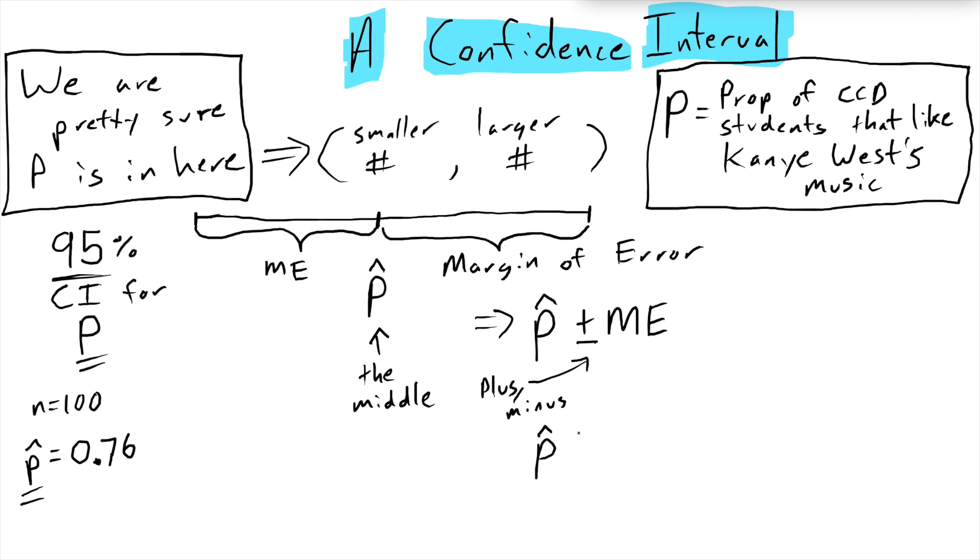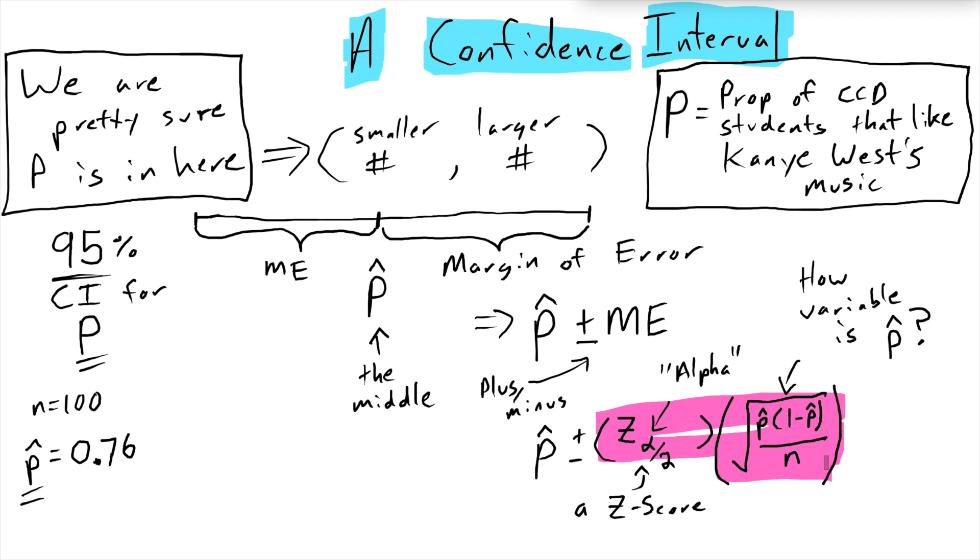But where does the margin of error come from? It comes from two quantities. The first of which is a z score. And the second of which is a measure of variability of our sample proportion. And I'll just give you this one. This might look fairly familiar. It's the square root of p hat times one minus p hat divided by the size of our sample. And this z score is written in your book as a z with a subscript of this little fish guy, which is alpha. There's a lot of Greek letters in here. And this is another one, alpha over two. So these two quantities together, when you multiply them, you get the margin of error. So this is our formula for a confidence interval for the population proportion.